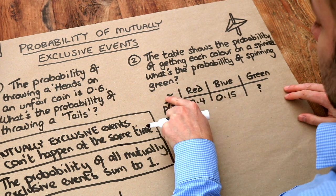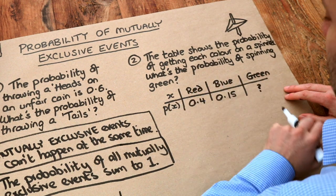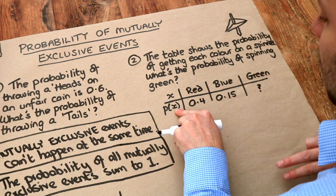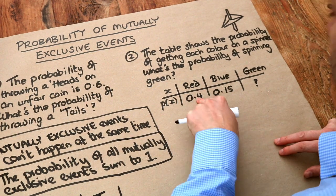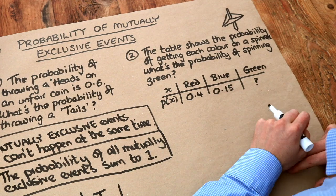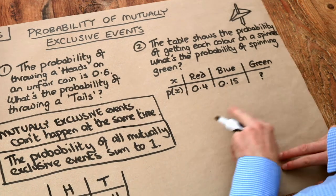Now x, by the way, is a variable just representing the different possible outcomes that we might have, and p(x) just means the probability of getting that particular outcome. So the probability of getting red, the probability of getting blue, the probability of getting green. Now again, by this law here, all our probabilities have to sum to one.